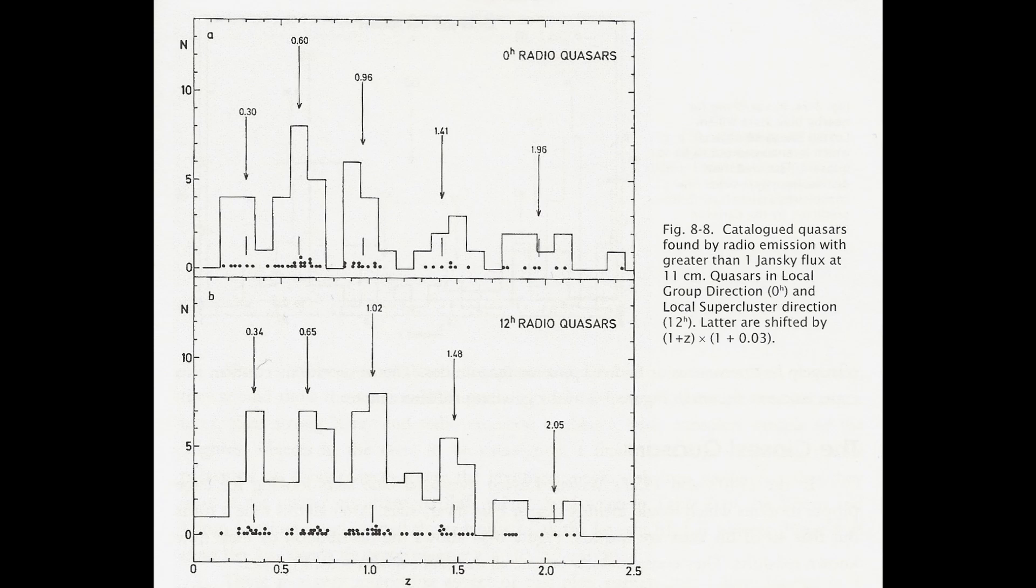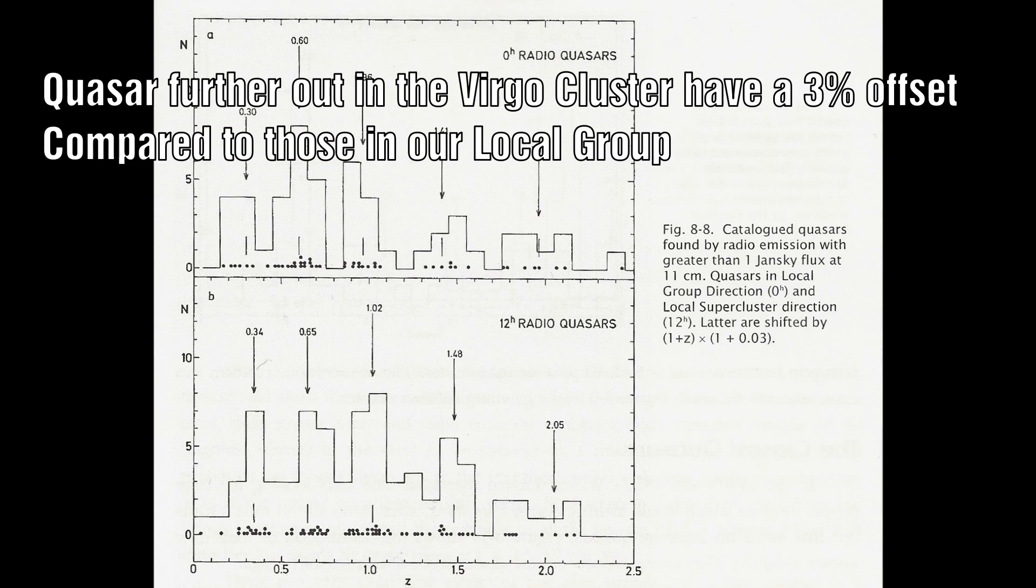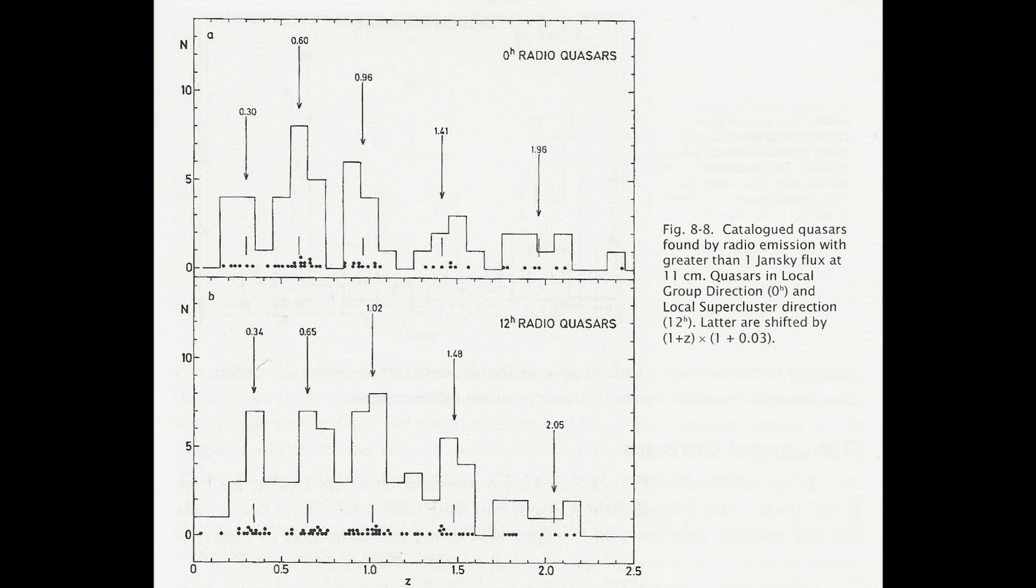What is interesting is there is a 3% difference in the offset between these two groups. This more than likely represents a difference in redshift between quasars which are part of our local group versus those that are part of the local supercluster Virgo. Together these results represent a 99.7% confidence in the periodicity of the quasars.